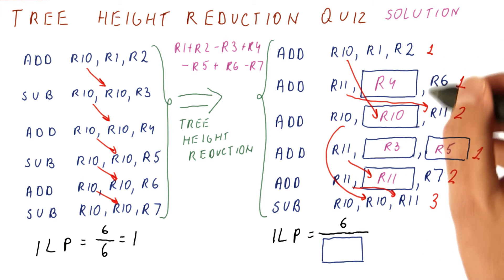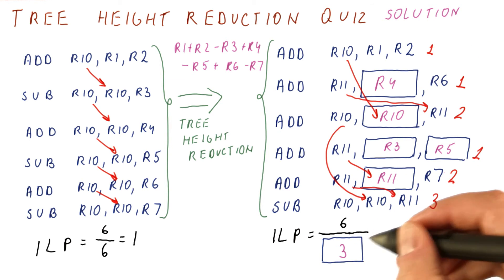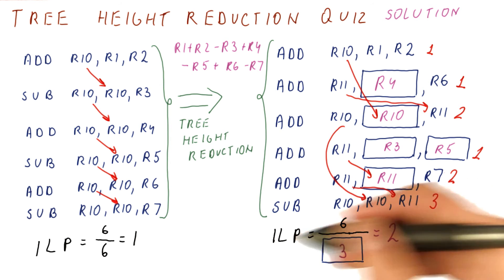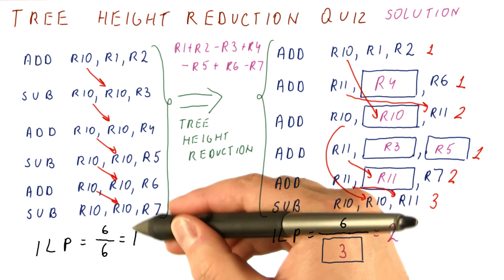So we have completed our six instructions now in three cycles, and we got an ILP of two, which is twice as good as we had before the tree height reduction.